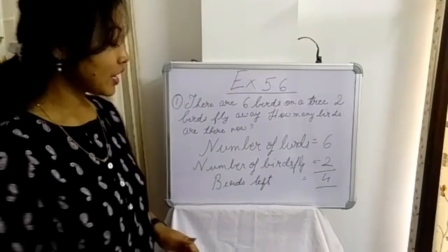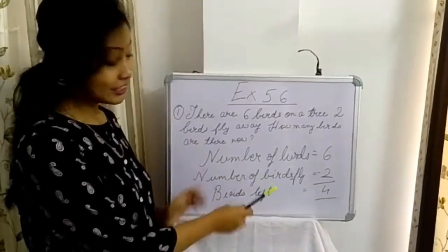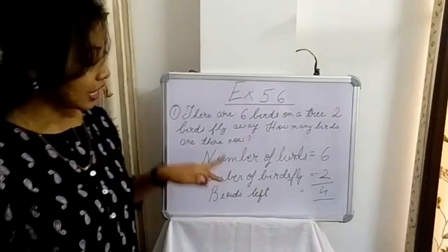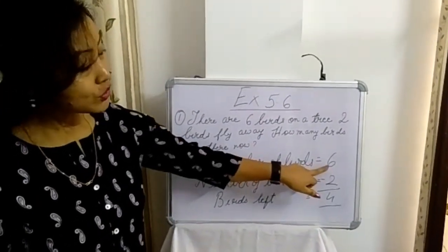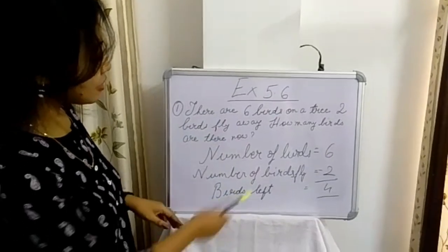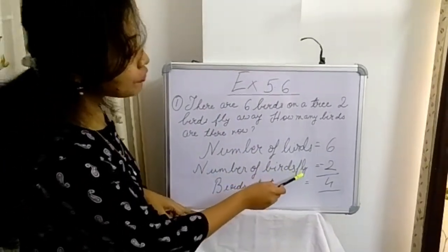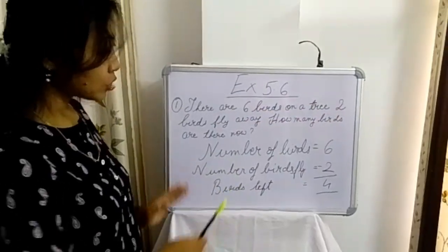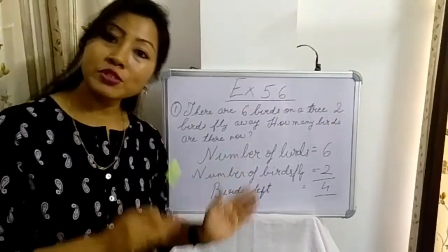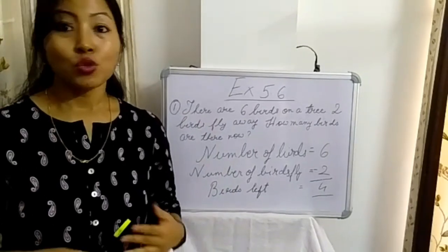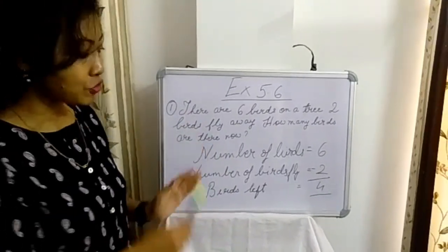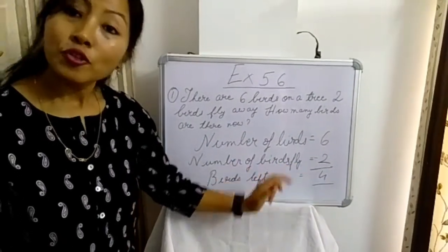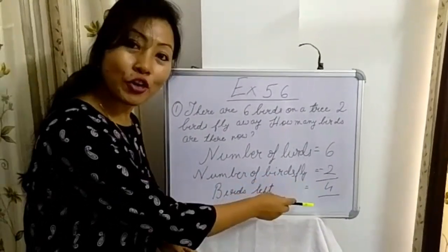So how are you going to do this? Number of birds equals to 6. You can see 6 birds were there. Number of birds that fly is 2. So now you have to find out: from 6 birds, 2 birds already flew. So what is the number left? If you minus 2 from 6, you will get 4. So how many birds are left? 4.